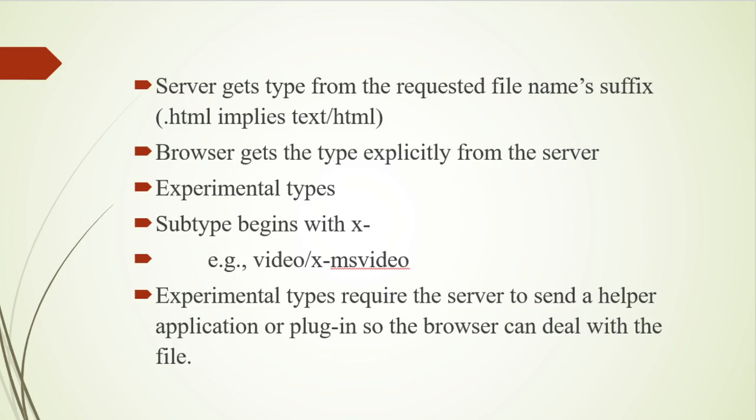Such software are called helper applications or plugins. The name of an experimental subtype begins with 'x-', for example video/x-ms-video. If the browser does not have a helper application or plugin to render a document, an error message is displayed. Every browser has a set of MIME specification file types it can handle. All browsers can deal with, for example, text/plain and formatted text, and text/html which means HTML files. Thank you.